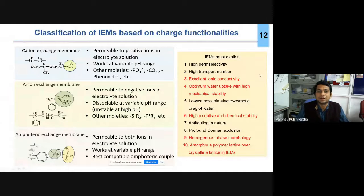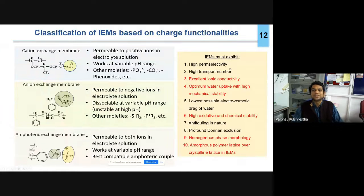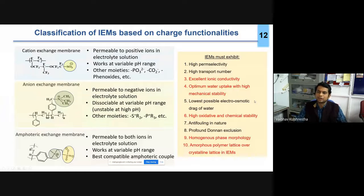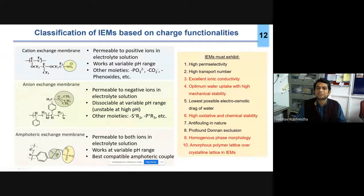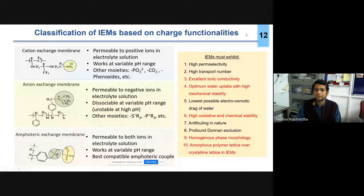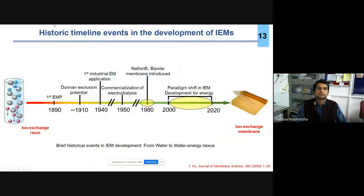The basic properties required of an ion exchange membrane are: high ionic selectivity allowing only one type of ion transport; high transport number for ions; high ionic conductivity; optimum water content — not too high to avoid loss of stability; lowest possible electroosmotic drag; high chemical and oxidative stability; fouling resistance; and homogeneous phase morphology.